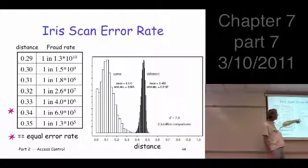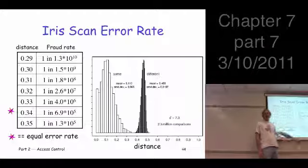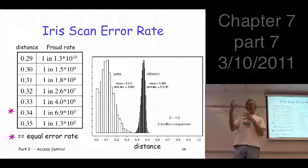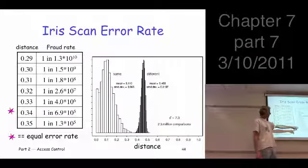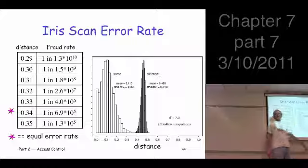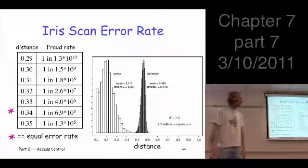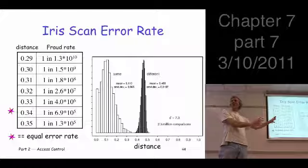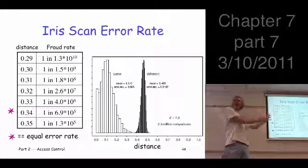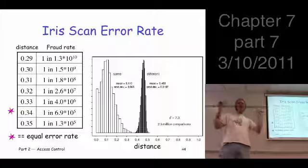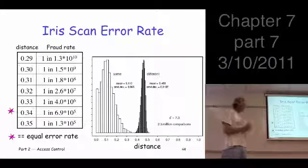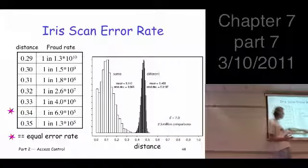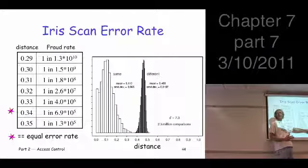Now these are the distributions. Here's a bunch of cases where you took the same iris, took two different scans of it and compared those. And these are the cases where you took two different irises and computed their score, their distance. Now just looking at the picture, why does that look good? If you're trying to design a biometric, you see these two distributions, you say aha, I've got something here.